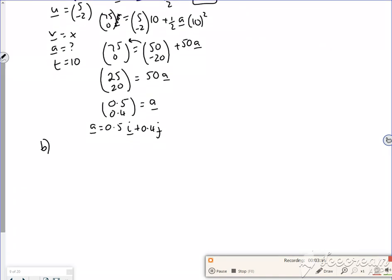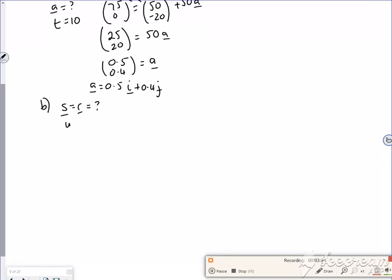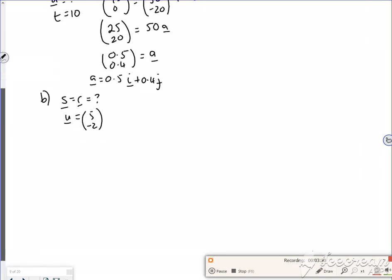So I want to find out what s is now, or r. I've got my u value, which was 5 minus 2. So I'm finding its position. a I know is 0.5, 0.4, and t we're saying is 8.